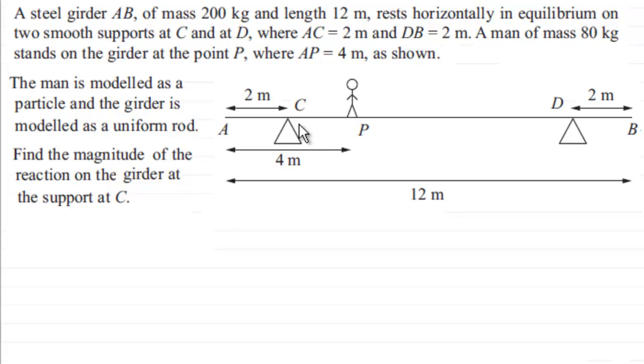What we've got to do is find the magnitude of the reaction on the girder at the support at C. So before we start, what we need to do is mark in some of the forces that are acting on the girder.